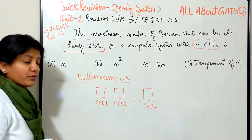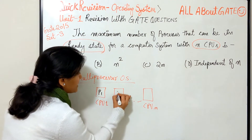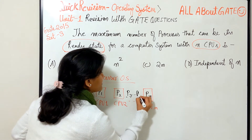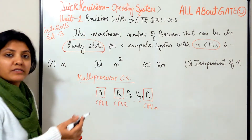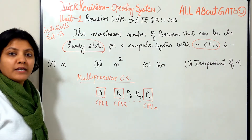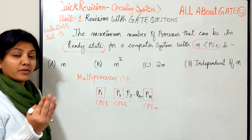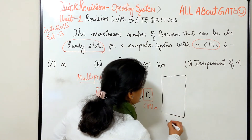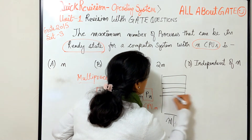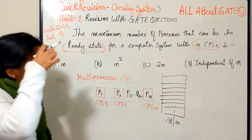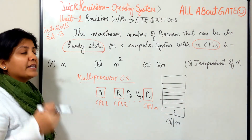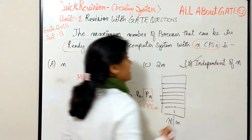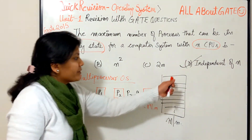Before answering for the ready queue, let's consider the running state. With n CPUs, I can assign one process to each CPU, so up to n processes can be running simultaneously. If the question asked about the running state, option A would be correct. But since it asks about processes in main memory — the ready state — there is no limit tied to n. The answer is option D: independent of n.